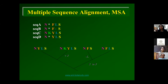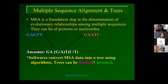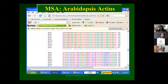Multiple sequence alignment is a foundation step in the determination of evolutionary relationships among multiple sequences. You can look at both proteins and nucleotides. Various softwares can convert the MSA data into a tree using various algorithms. If you have a monophyletic origin or a single ancestral sequence, then you get a rooted tree. If you don't do that, you can still get what is called an unrooted tree or a radial tree.